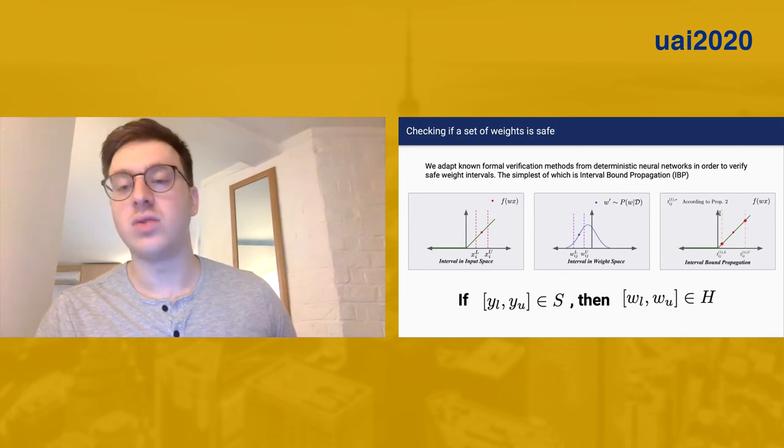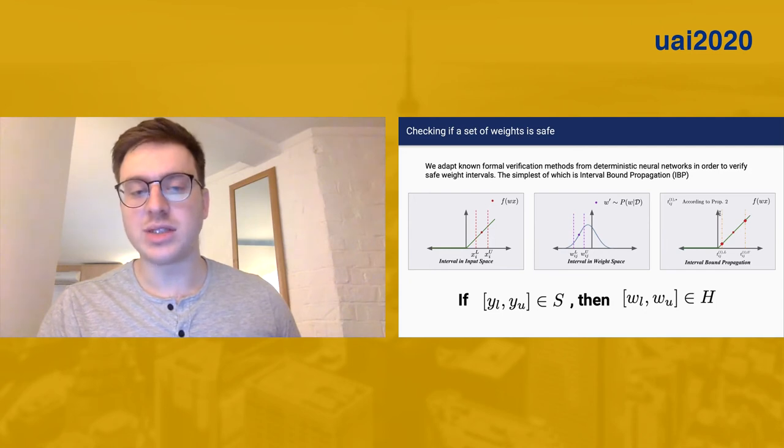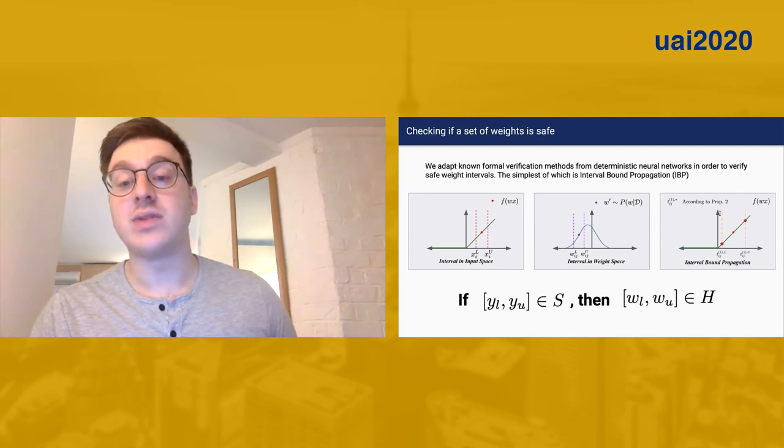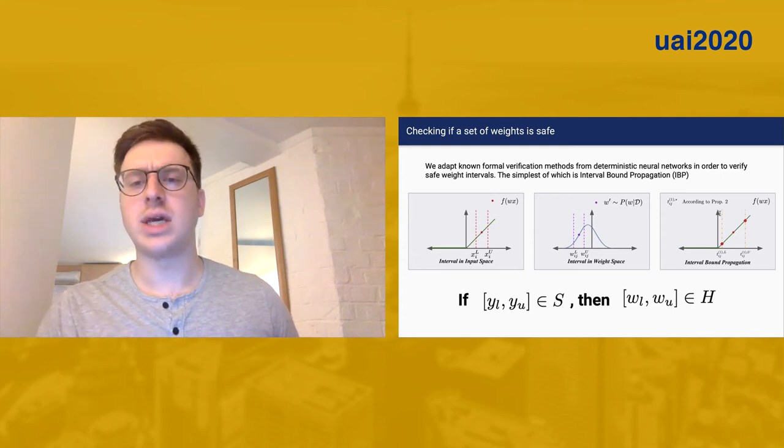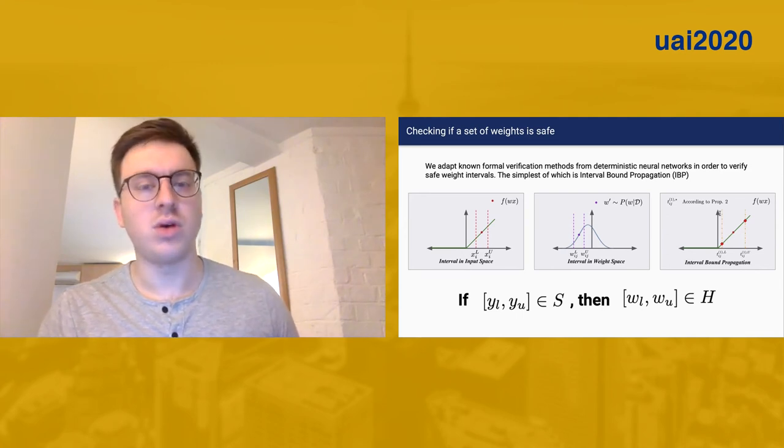The important part is that you're able to take an interval input space and an interval in weight space and compute an interval in output space. And then if this interval in your output space is inside of the safe set, then your interval in weight space is inside the safe set of weights. There's a lot more detail, and we go over several different algorithms in the paper.